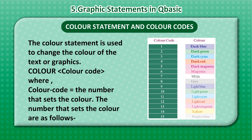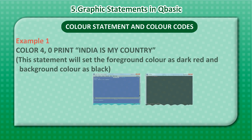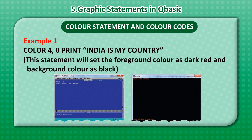Color codes: 1 — Dark Blue, 2 — Dark Green, 3 — Dark Cyan, 4 — Dark Red, 5 — Dark Magenta, 6 — Magenta, 7 — White, 8 — Gray, 9 — Light Blue, 10 — Light Green, 11 — Light Cyan, 12 — Light Red, 13 — Light Magenta, 14 — Yellow, 15 — Bright White. Example 1: COLOR 4, 0 — PRINT "India is my country". This statement will set the foreground color as dark red and background color as black.